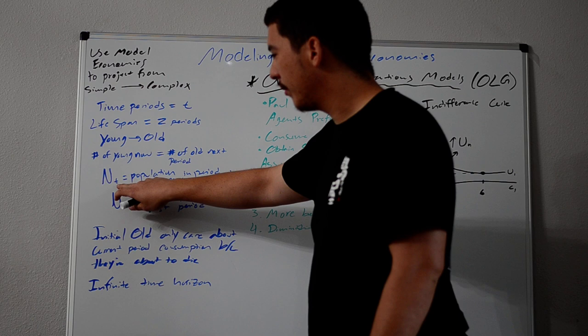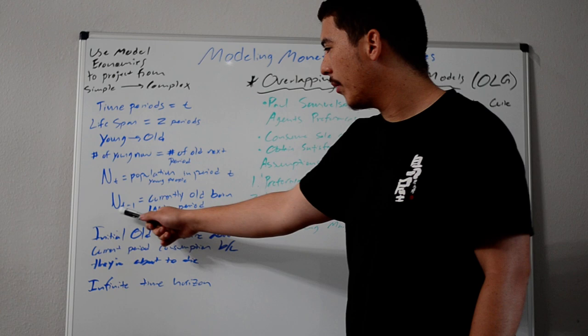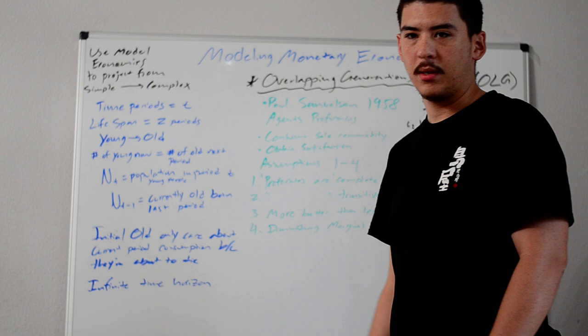The number of young born last period is exactly equal to the number of old in this current period. N subscript t represents the population of young. N of t minus one is the population of old. So, capital N denotes our population. You can have growing population, decreasing population, constant. All of that comes later. This is all just a setup for the model.